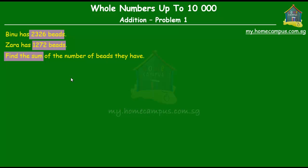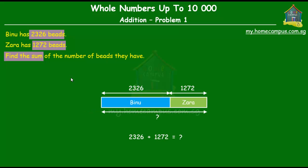Well, sum means addition. So we know that we have to add the number of beads that Binu has to the number of beads that Zara has to find the total number or the sum of the number of beads they have. And the sum would be the two units added together.